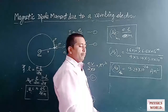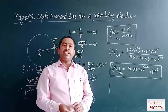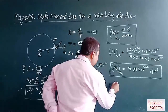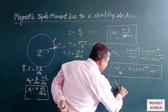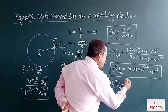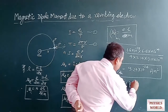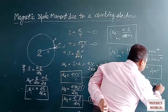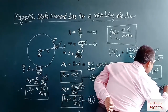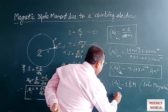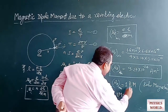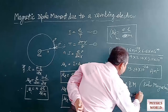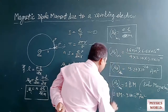This minimum dipole moment possessed by the first orbit electron, 9.27 × 10⁻²⁴ A·m², is defined as one Bohr magneton (Bm). So 1 Bohr magneton = 9.27 × 10⁻²⁴ A·m².